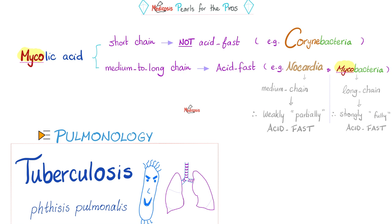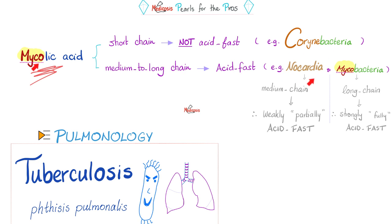Why is tuberculosis acid-fast? It's thanks to the mycolic acid. Why do we call it "myco"? Because back in the day, we thought these organisms were fungi — myco means fungus, and mycology is the science that studies fungi. So we called it mycolic acid. Later, we discovered these are not fungi. Some have hyphae that branch and look like fungi, but they are not fungi.